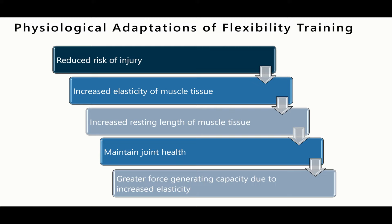The second adaptation is an increased elasticity of muscle tissue — the muscle's ability to stretch and then return back to its original length, which offers increased potential for force production. The third adaptation is an increased resting length of muscle tissue, meaning a greater range of motion as a starting point, which further increases flexibility and reduces the chance of injury. Flexibility training also maintains joint health; taking a joint through a full functional range helps avoid the acute and chronic issues often associated with joints, especially as we age.